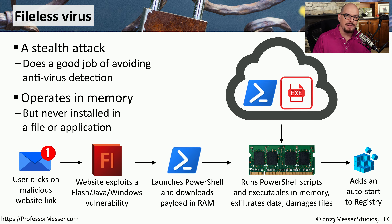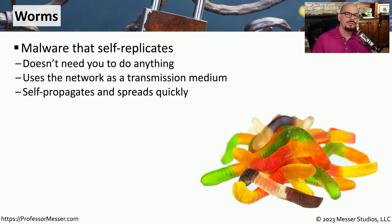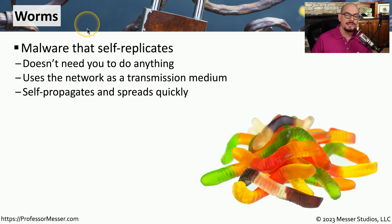Since this virus is not saving any malicious software to the file system, it needs some way to restart if your system is rebooted. So normally, this type of virus may add an auto start to the registry of your Windows operating system, so that the next time you start your system, this process occurs all over again. We've talked about viruses and how the user has to click a link or have some type of interactivity to get that virus running in memory. But there are certain types of malicious software that can run without any user intervention. This malicious software is called a worm.